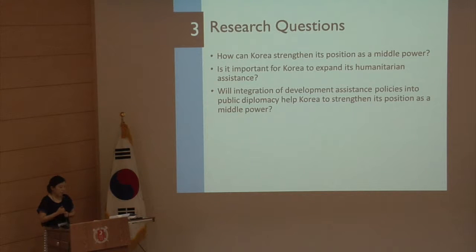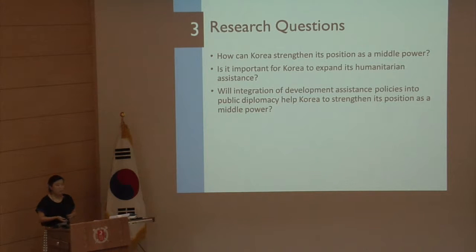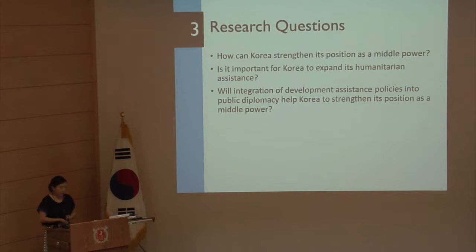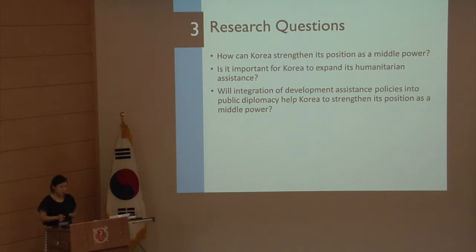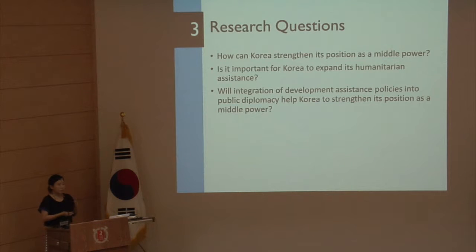With this in mind, thinking of how the direction of Korea's development cooperation strategy should head, I came up with three research questions, and in order to address them I conducted a comparative analysis between Korea and Australia. Both countries are middle powers and members of MIKTA and the OECD DAC, with similar economy sizes and geographic positioning. Looking through this analysis, I found that Australia, in terms of ODA and humanitarian assistance, seemed to be doing quite well.